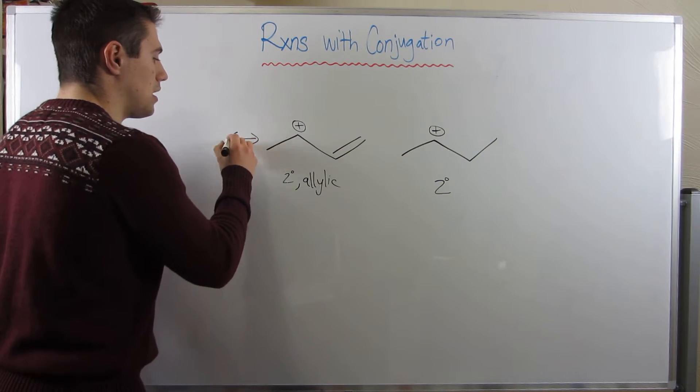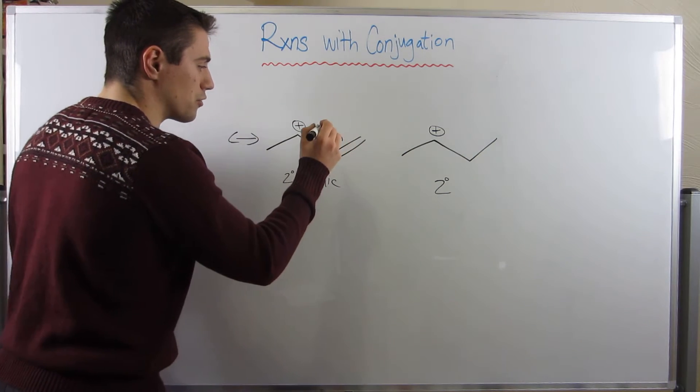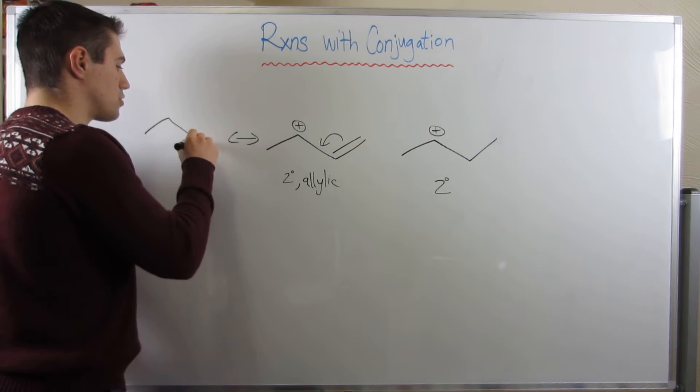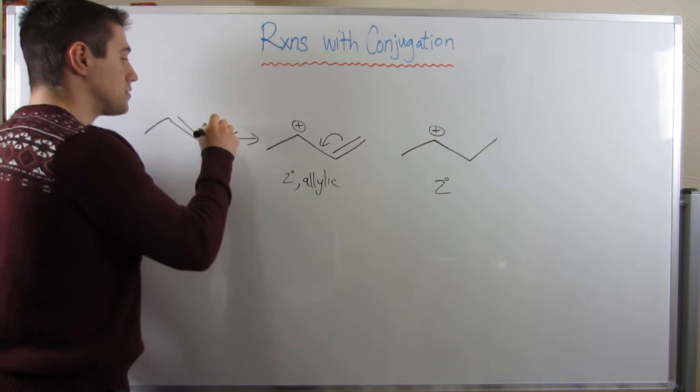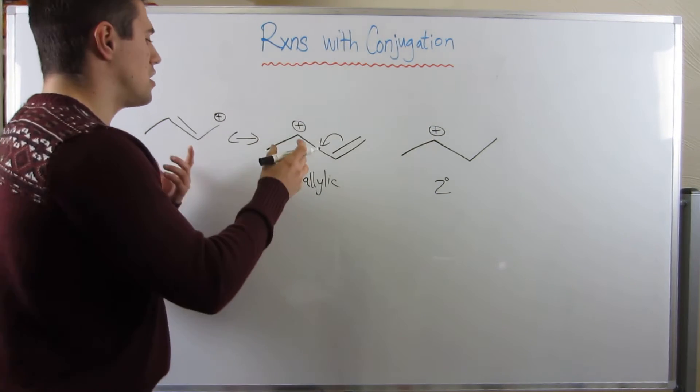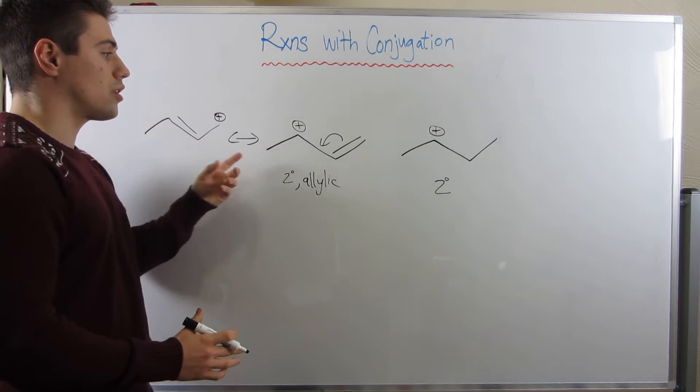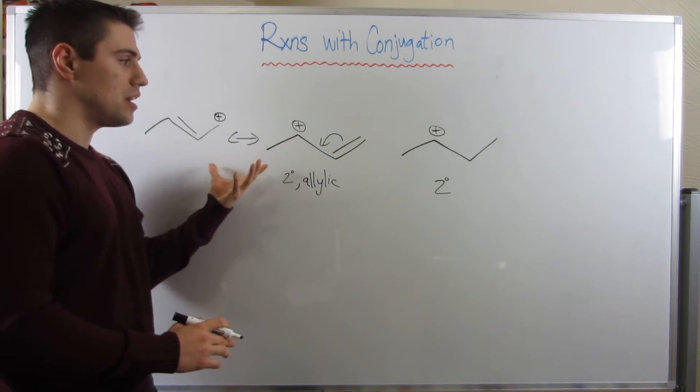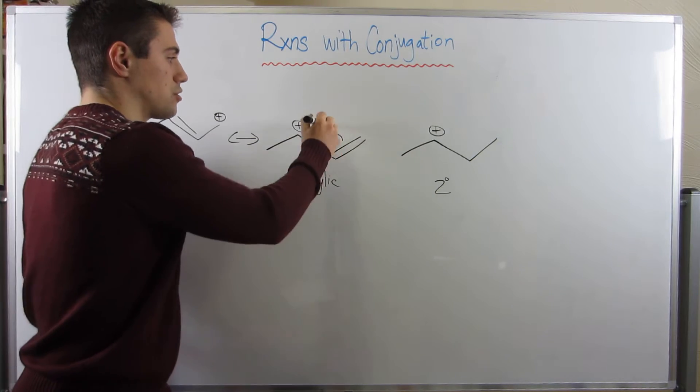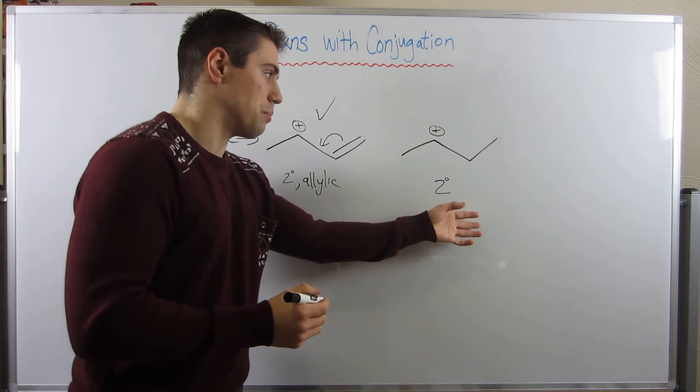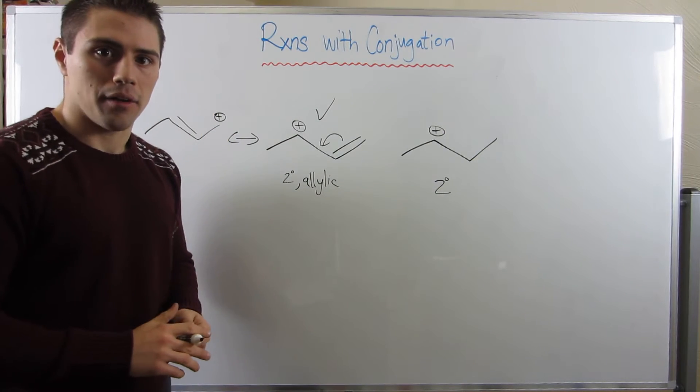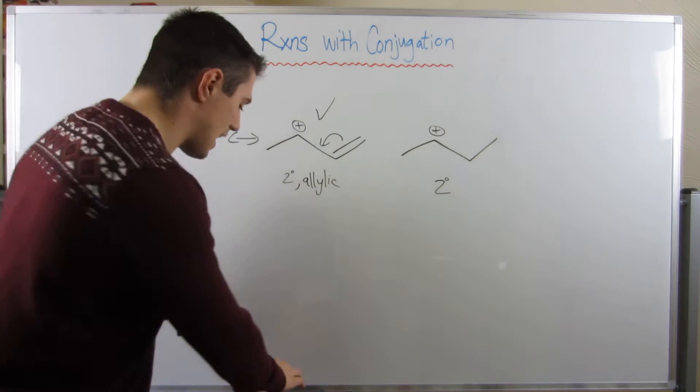So we could draw our double-headed arrows. I could swing this bond over here and draw a resonance structure looking like this. And you can see, because there's two resonance forms that's helping to distribute this positive charge over not just this one atom, but multiple atoms, that easily this structure is more stable than just this bland old secondary carbocation.